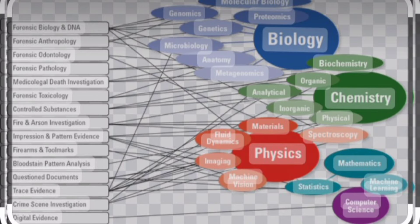The types of forensic science include: forensic biology and DNA, forensic anthropology, forensic odontology, forensic pathology, medical-legal death investigation, forensic toxicology, controlled substance analysis, fire and arson investigation, impression and pattern evidence, firearms and tool marks, pattern analysis, questioned documents, trace evidence, crime scene investigation, and digital evidence.